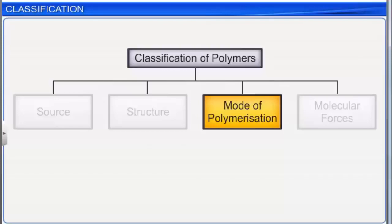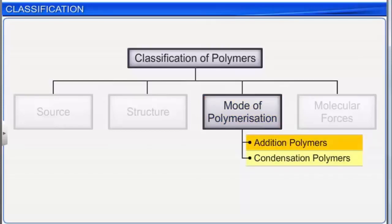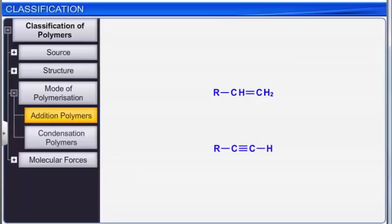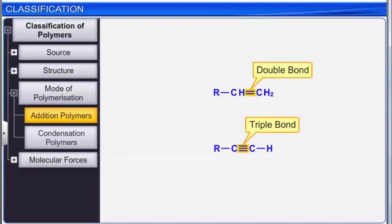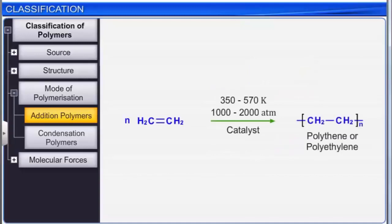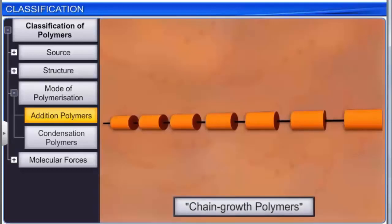On the mode of polymerization, polymers are classified into two categories: addition polymers and condensation polymers. Addition polymers are formed by the repeated addition of monomers containing double or triple bonds. The reaction involves breaking of pi bonds. Addition polymers are sometimes referred to as chain growth polymers.